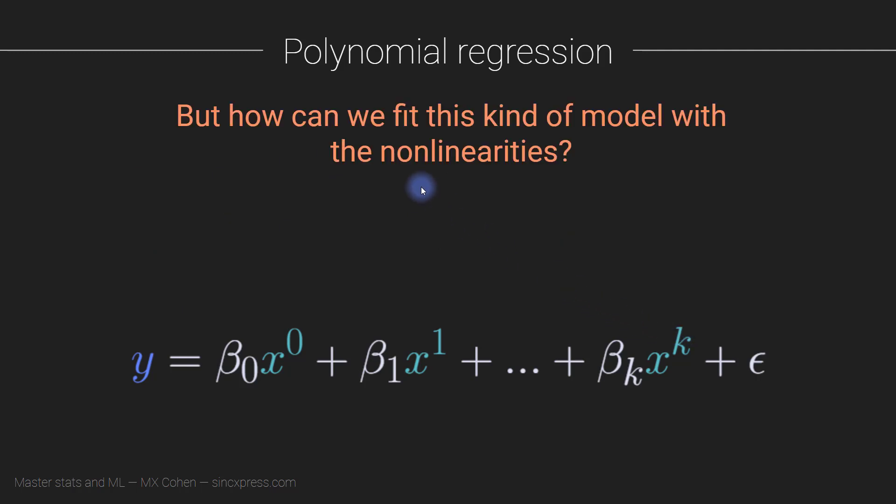Now, here's a question: how can we fit this kind of model? Look at these nonlinearities, there's nonlinear terms. Here x is linear, but now we're bringing x to higher and higher powers. And didn't I say in the beginning of this section that regression is all about a general linear model, so it has to be linear? So how can we fit this polynomial regression if we have these squared terms and higher order power terms, which are nonlinear?